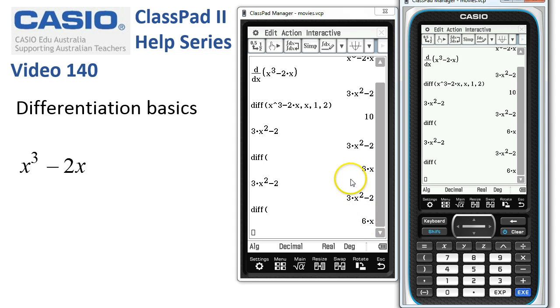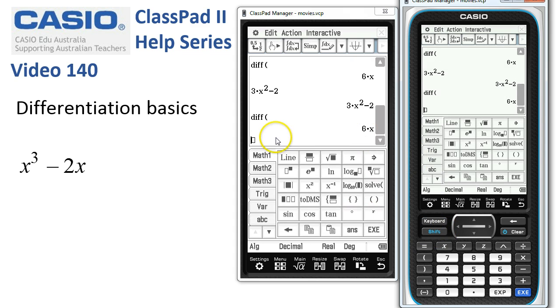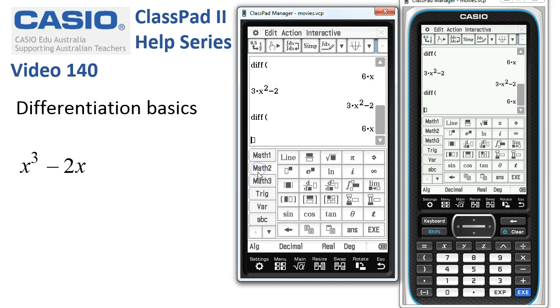There's also some on the keyboard. If I go to the math 2 where the calculus functions live and tap the derivative template, put nothing into the boxes and tap execute, you can see it's differentiated the expression on the previous line again. So three ways there that you could do some differentiation fairly quickly.